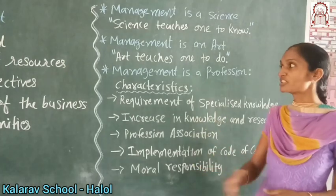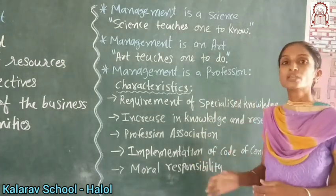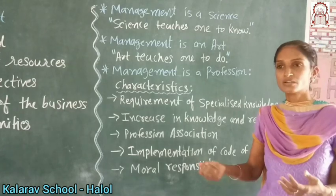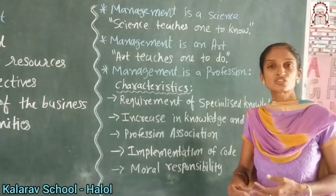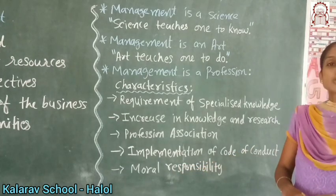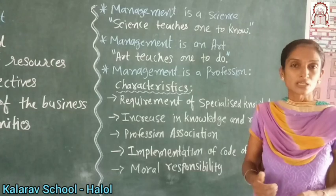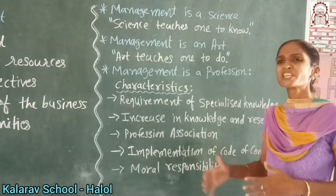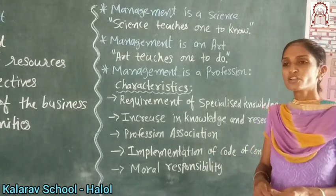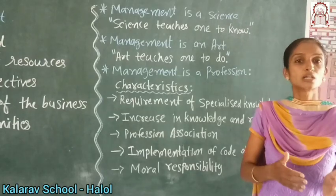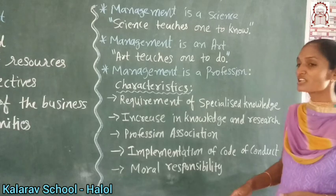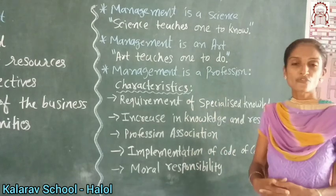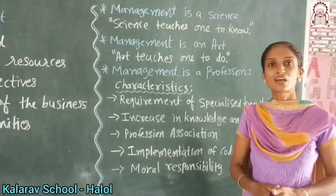Now moral responsibilities — whenever a person gets a management degree like MBA or BBA, they have responsibilities. For example, a chartered accountant has to be loyal to the accounts of the particular companies they serve. Moral responsibility means a person has to be loyal to their duties. So here some key concepts of management are covered. Thank you, we will continue to the next part.